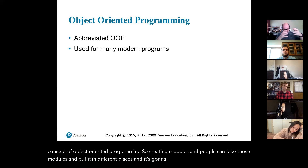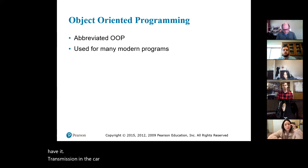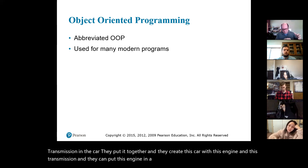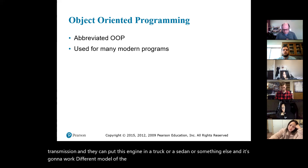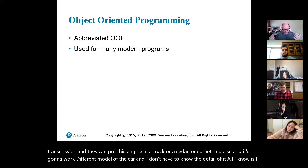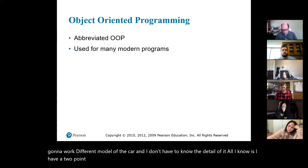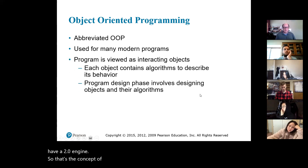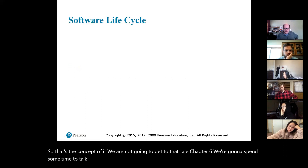For example, we have an engine and a transmission in a car. They put them together and create a car with this engine and transmission. They can also put that same engine in a truck or a sedan — a different model — and it's going to work. I don't have to know the detail; all I know is I have a 2.0 engine. That's the concept. We won't get to object-oriented until chapter six, and we'll spend time discussing it when we get closer.